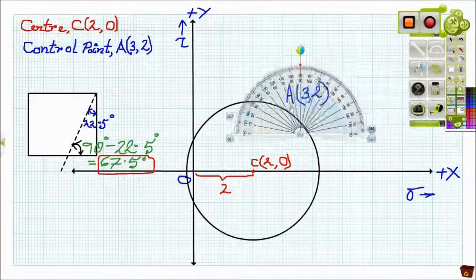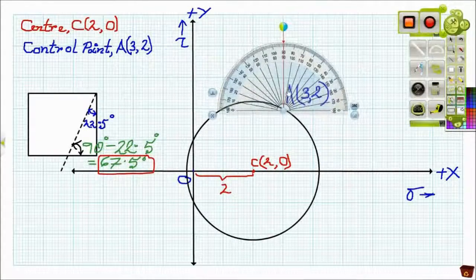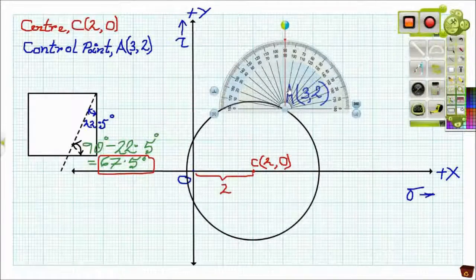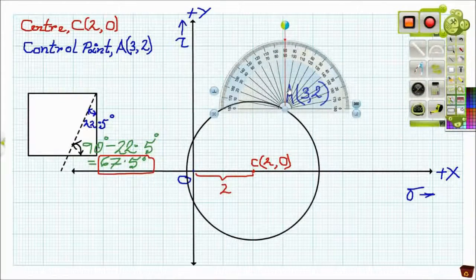Now, we have to draw a plane just parallel to that given inclined plane at control point A on Mohr circle.